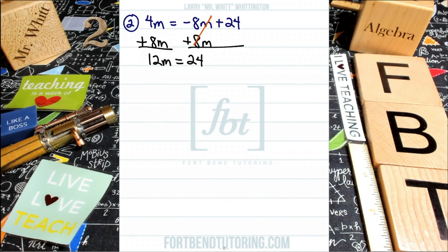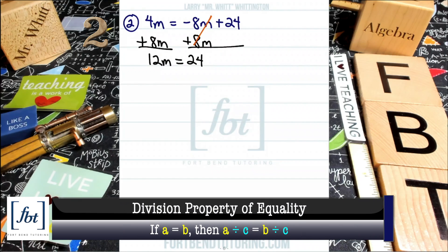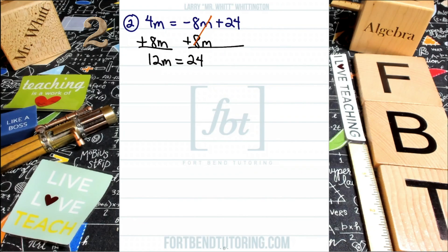Our simplified equation is 12m equals 24. Notice that we now have a coefficient of 12 in front of the variable m. Remember, our goal is to get m by itself. How do we do that? The division property of equality. Anytime you have a coefficient, a number in front of a variable, you can just simply divide both sides by the exact same value. I'll be dividing both sides of the equation by 12.